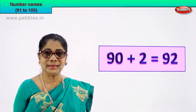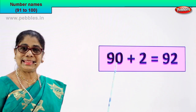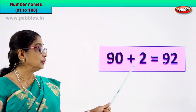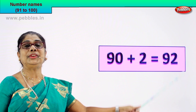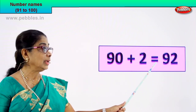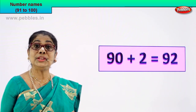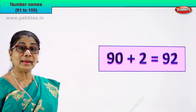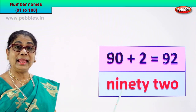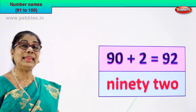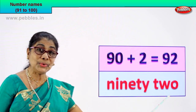Shall we go to the next one? Look at the numeral, learn to name it. 90 plus 2 is equal to 92. 9 and 2 — 92. That is the numeral. How do we name it? What is the spelling? You know the spelling of 90, you know 2. Let's write: N-I-N-E-T-Y — ninety — and T-W-O — two. Ninety-two.